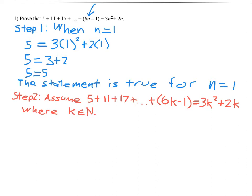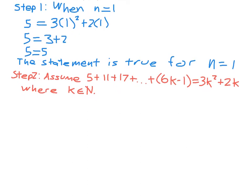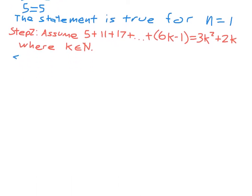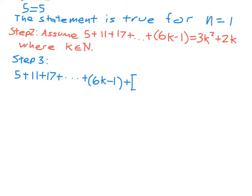Step three involves using step two to prove that the equation will also work for a natural number k plus one. We assume it's true for k and then we try to show that it works for k plus 1 as well. So you're basically rewriting the equation from step two, but then you're going to take it one step further and plug in k plus one.